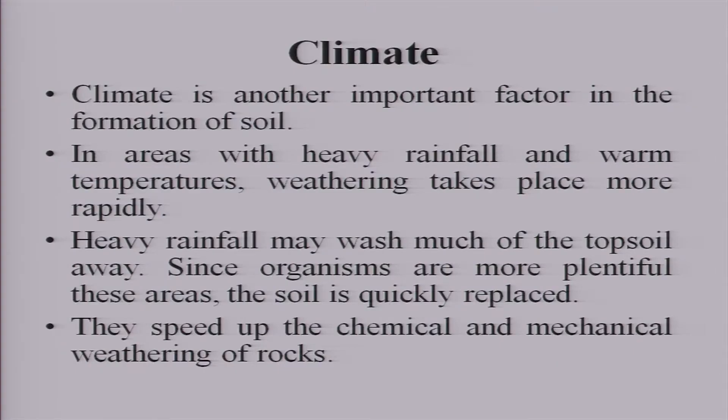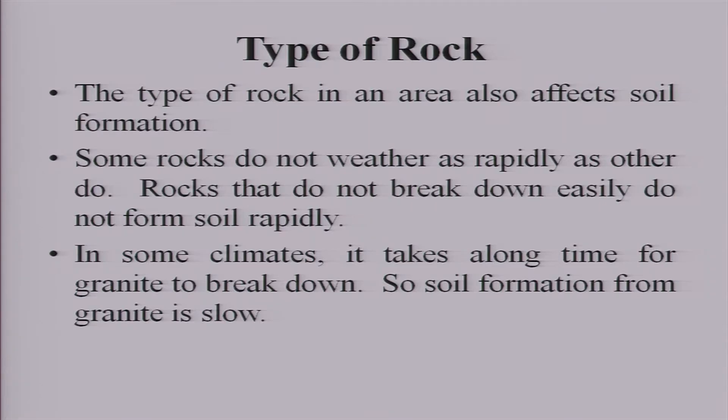In desert regions, a different kind of weathering takes place. Where there is heavy rainfall, warm temperatures, and life, these conditions speed up chemical and mechanical weathering of rocks. That is why you have different kinds of soil in different parts of the globe — the parent rock may be the same, but if climate conditions differ, the end product can be entirely different from the original parent rock.